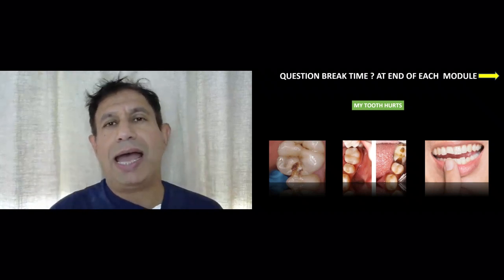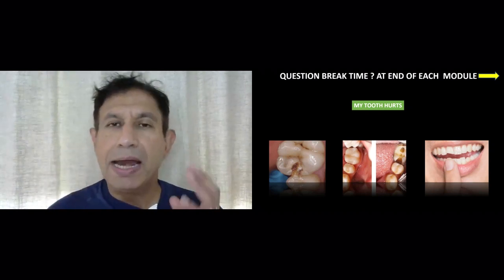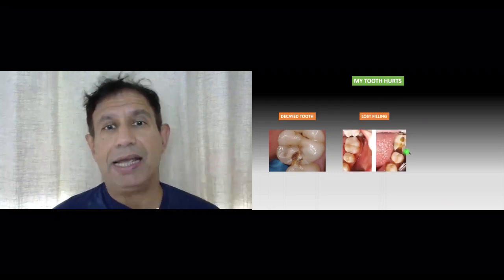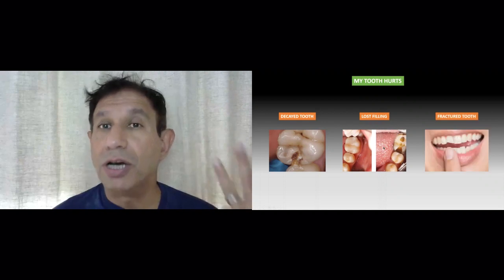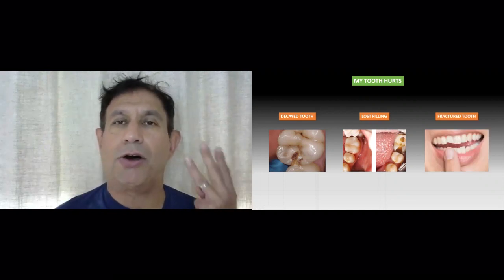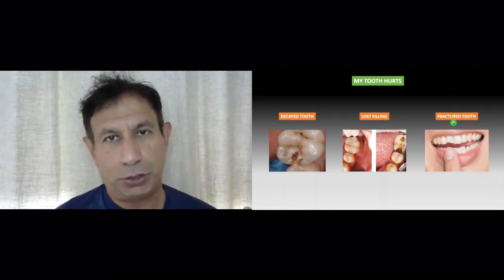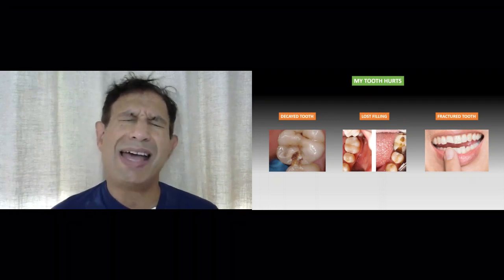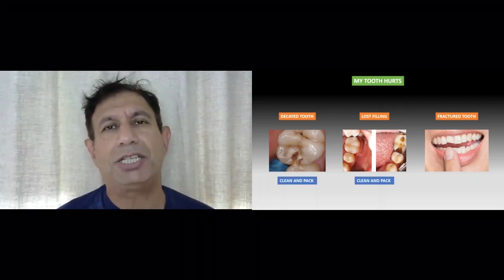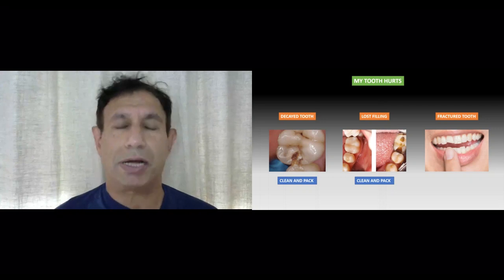Dental pain or tooth pain can be divided into three common factors: first, decay in the tooth causing a hole; second, a lost filling; and third, a fractured tooth. The principles of management differ: for decayed teeth and lost fillings, you clean and pack the area; for a fractured tooth, you cover and protect it.